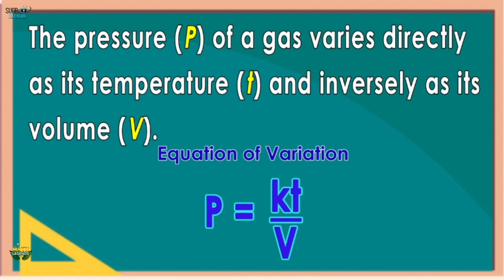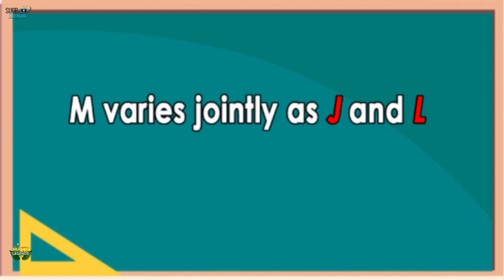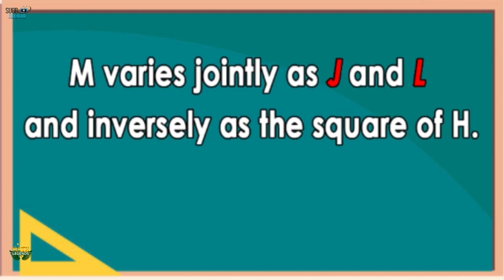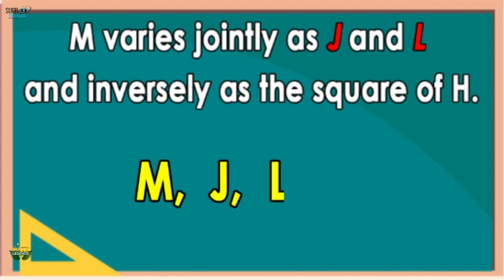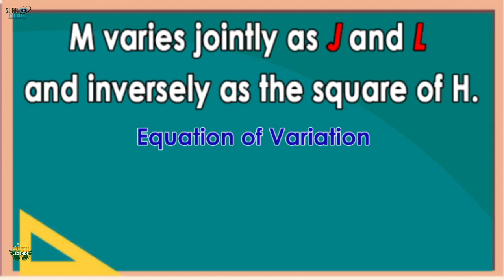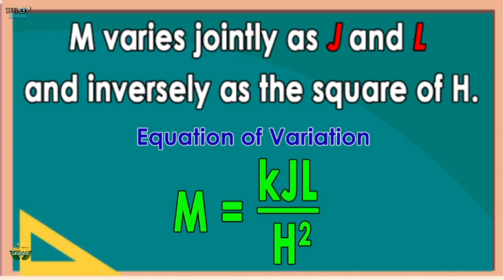Another example: M varies jointly as j and l, and inversely as the square of h. The quantities are M, j, l, and h squared. The clues are 'varies jointly' and 'inversely as.' We write M first; since it varies jointly as j and l, write j and l beside k. Below, in the denominator, is h squared. The equation is M = kjl/h².